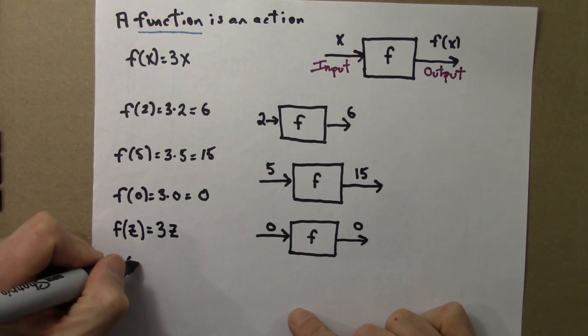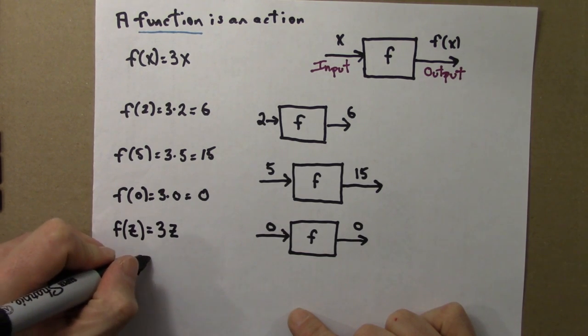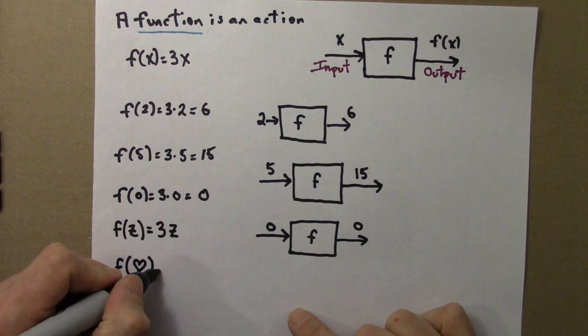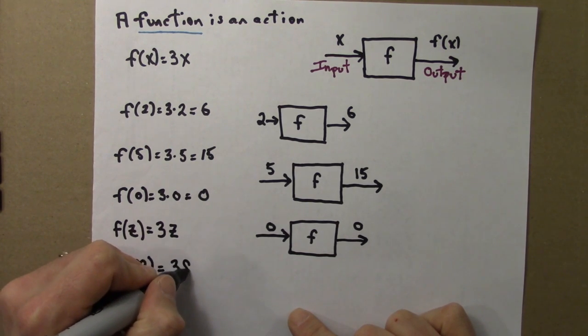If we had something like f acting on a heart, who knows what that would mean? You have a heart, then you triple the heart, you have 3 hearts.